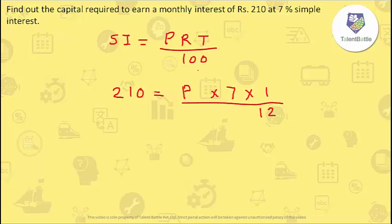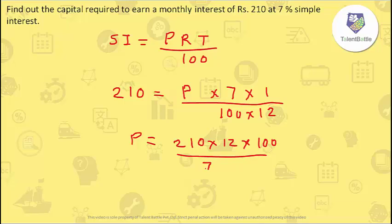With T = 1/12 and SI = 210, R = 7, we calculate: P = (210 × 12 × 100) / 7. Simplifying — 7 × 3 = 21 cancels to give 30, and 12 × 3 = 36, making it 36,000. So the answer for this question is that the principal required is Rs. 36,000.